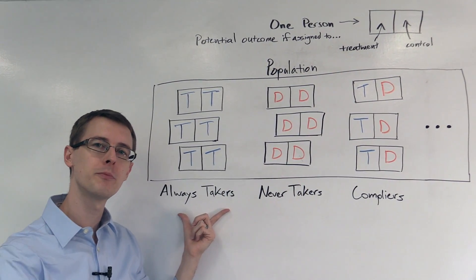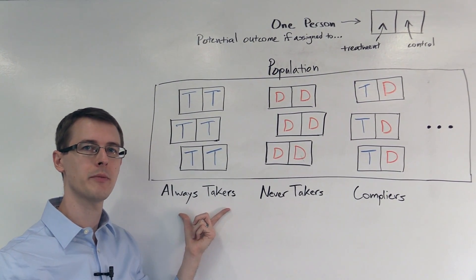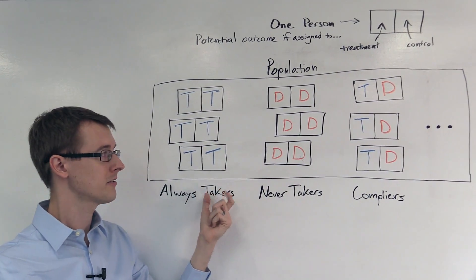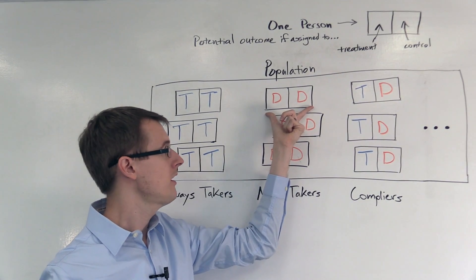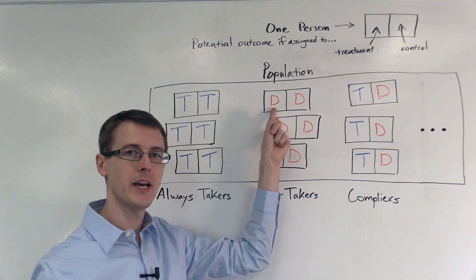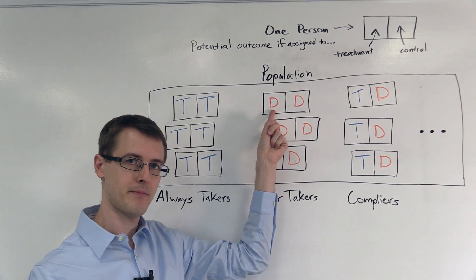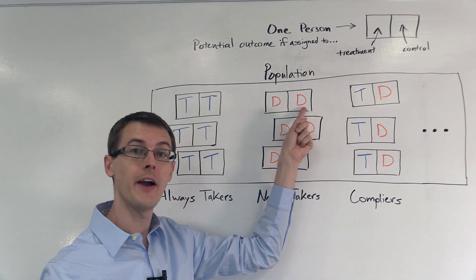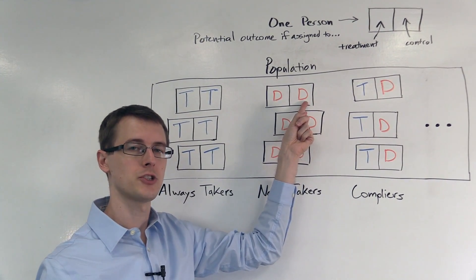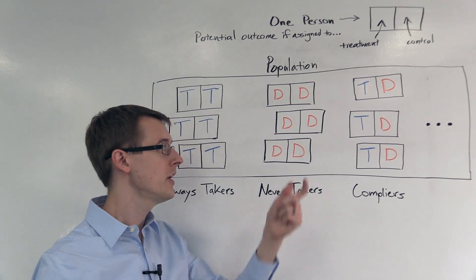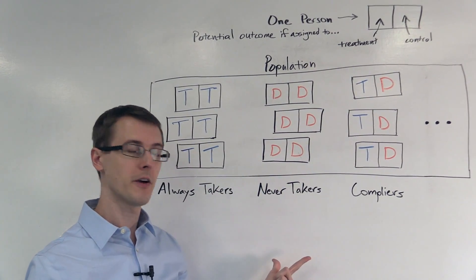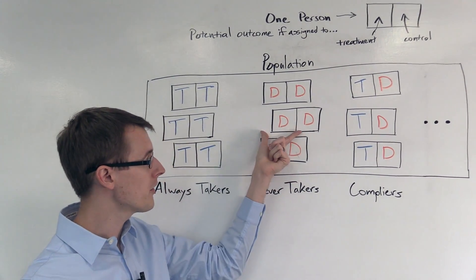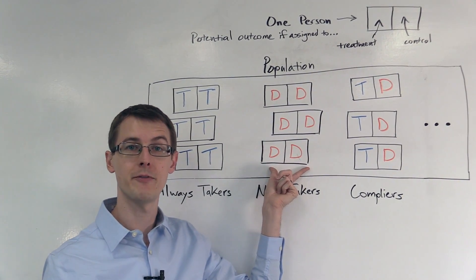Regardless of which group they're assigned to, they always take the treatment. And there are other people in our population who are also always takers. This person right here — when they're assigned to the treatment group, they don't take the treatment. When they're assigned to the control group, they also don't take the treatment. So regardless of what they're assigned to, they don't take the treatment. Therefore, they are a never taker, and there are other people in our population who could be never takers.